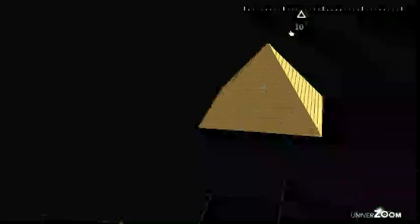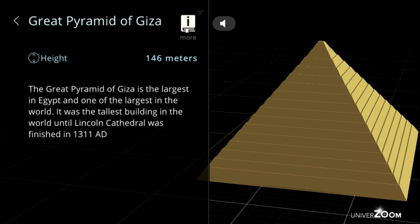The Great Pyramid of Giza, height: 146 meters. The Great Pyramid of Giza is the largest in Egypt and one of the largest in the world. It was the tallest building in the world until Lincoln Cathedral was finished in 1311 A.D.